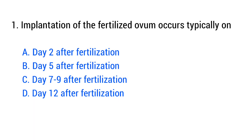Question number 1. Implantation of the fertilized ovum occurs typically on? The right answer is option C, day 7 to 9 after fertilization.